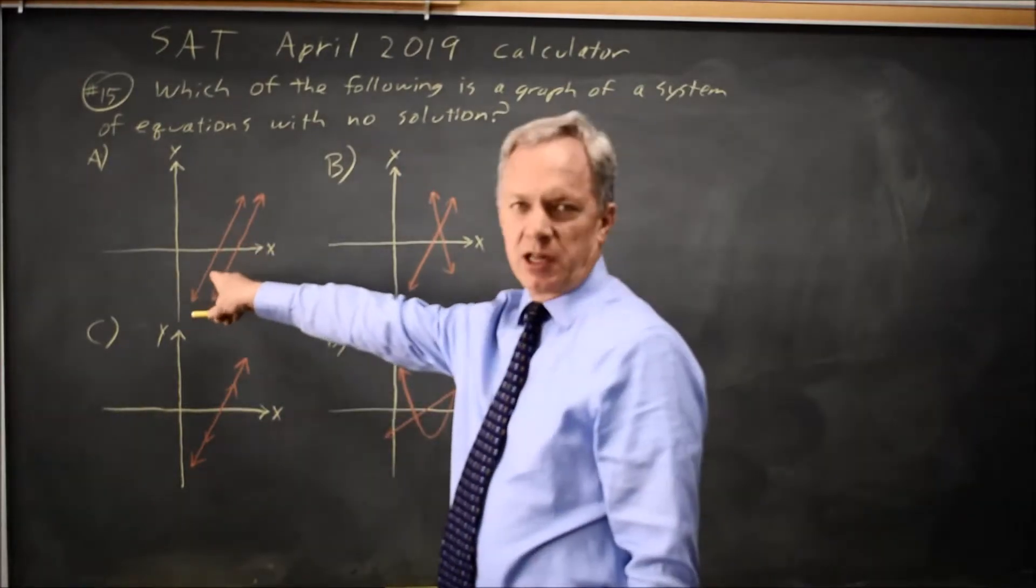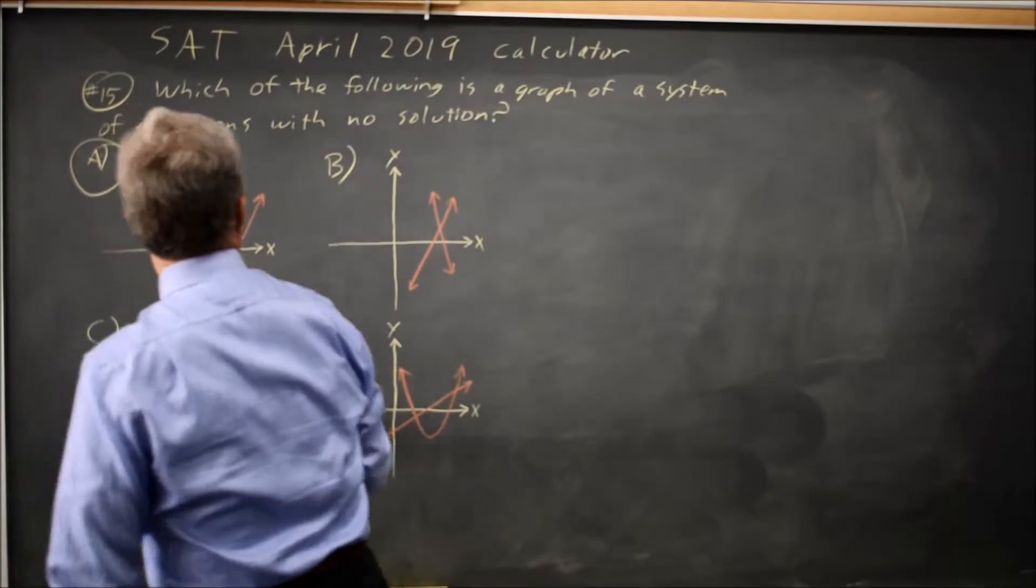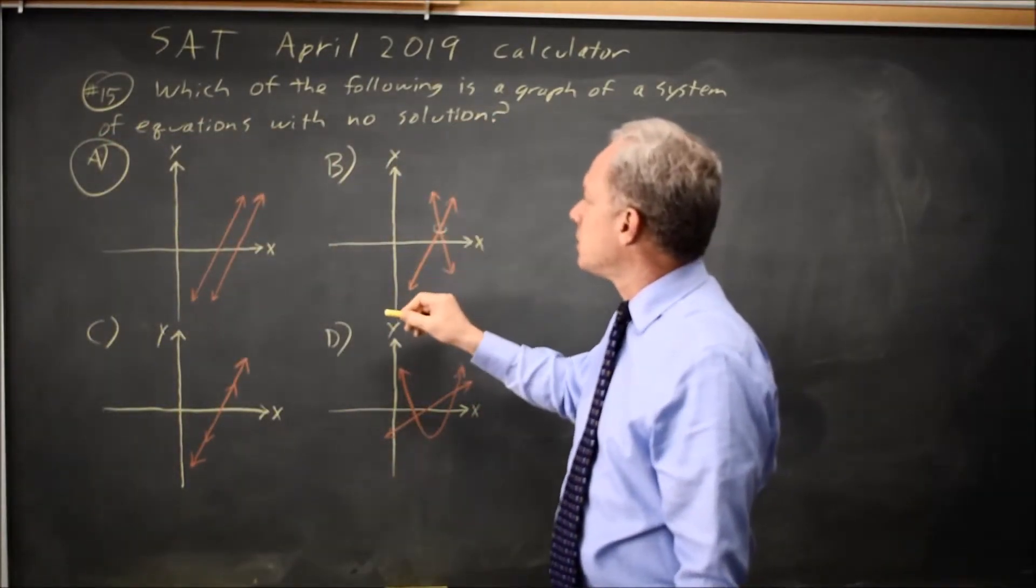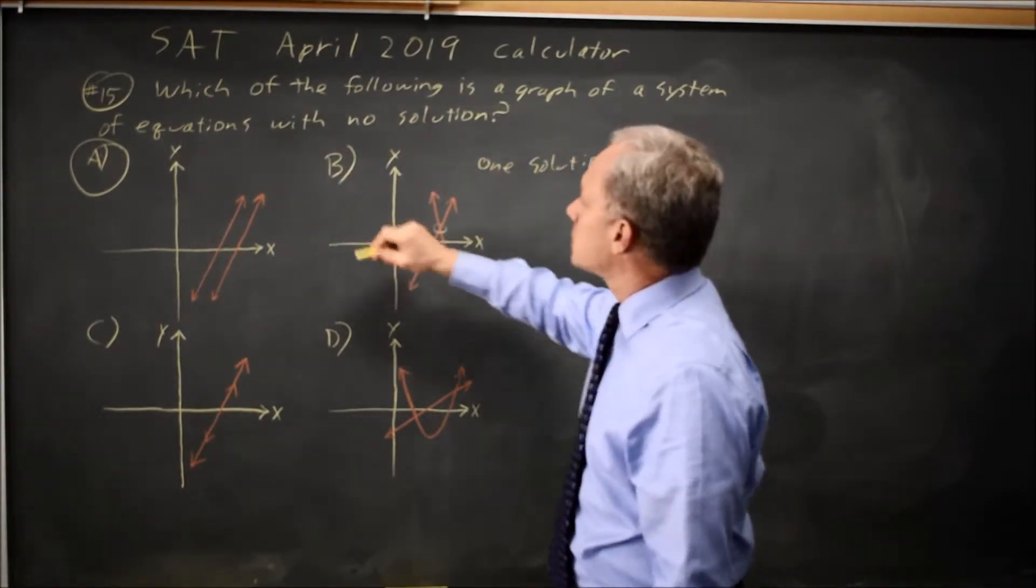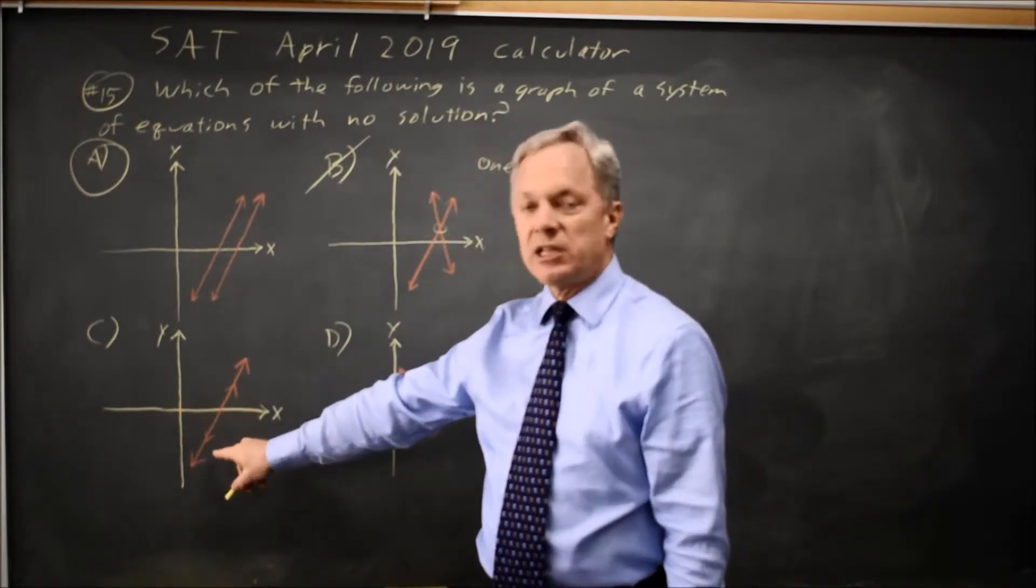In graph A we have parallel lines which do not intersect, so that would be the right answer. In graph B we have lines with different slopes that intersect at a single point, so that has one solution, which is not what they're asking for.